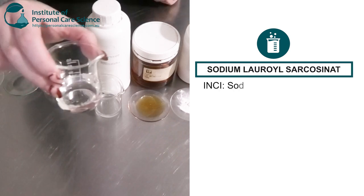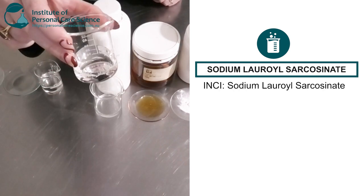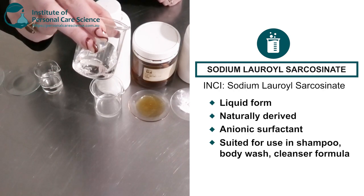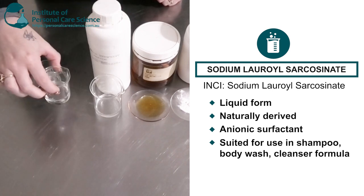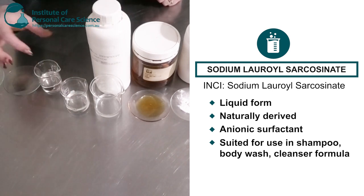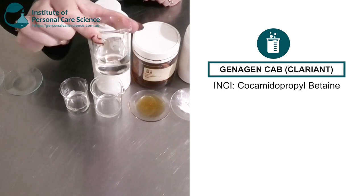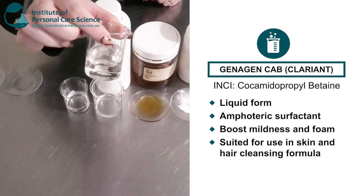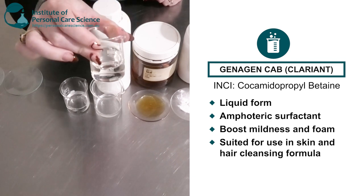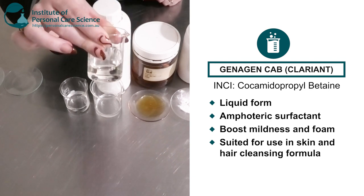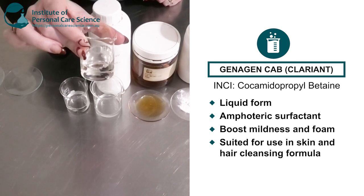Next I have some sodium lauryl sarcosinate. This is also a naturally derived anionic surfactant. So perfect for your cleansing products. This here is the Genogen CAB which is your cocoamidopropyl betaine. So this is an amphoteric surfactant. This is going to boost mildness and also foam in your cleansing products.